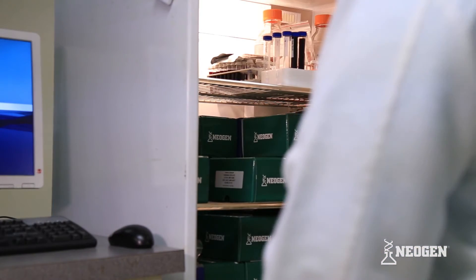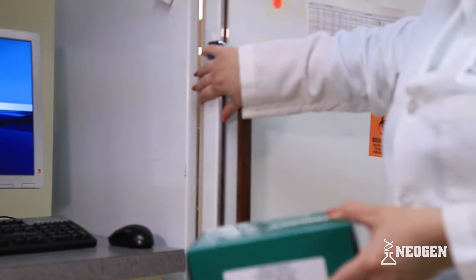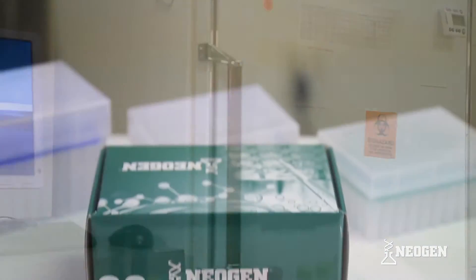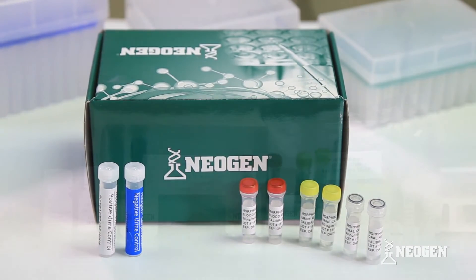Setup. When you are ready to run your samples, remove the Neogen Kit from the refrigerator. If any kit components, like controls, are stored frozen, you will need to take them out at this time so that they can thaw completely before beginning the run.